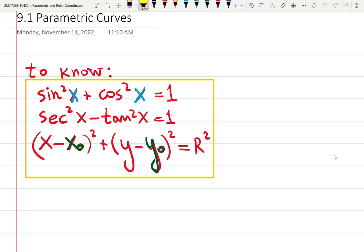We need to know for this chapter: sine squared x plus cosine squared x is 1, that's a review. Secant squared x minus tangent squared x is also 1.